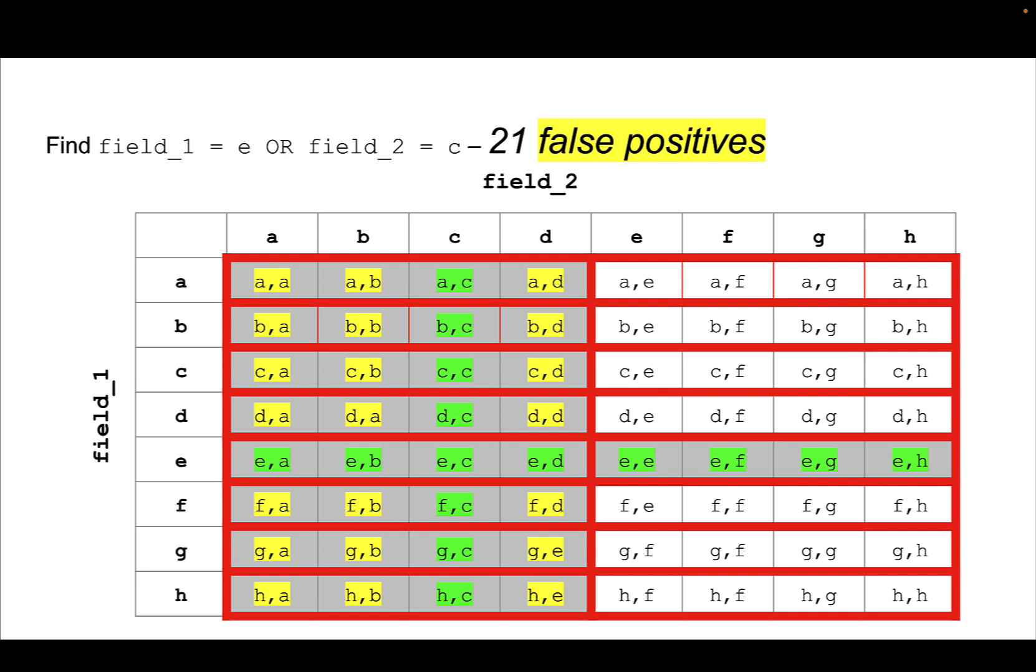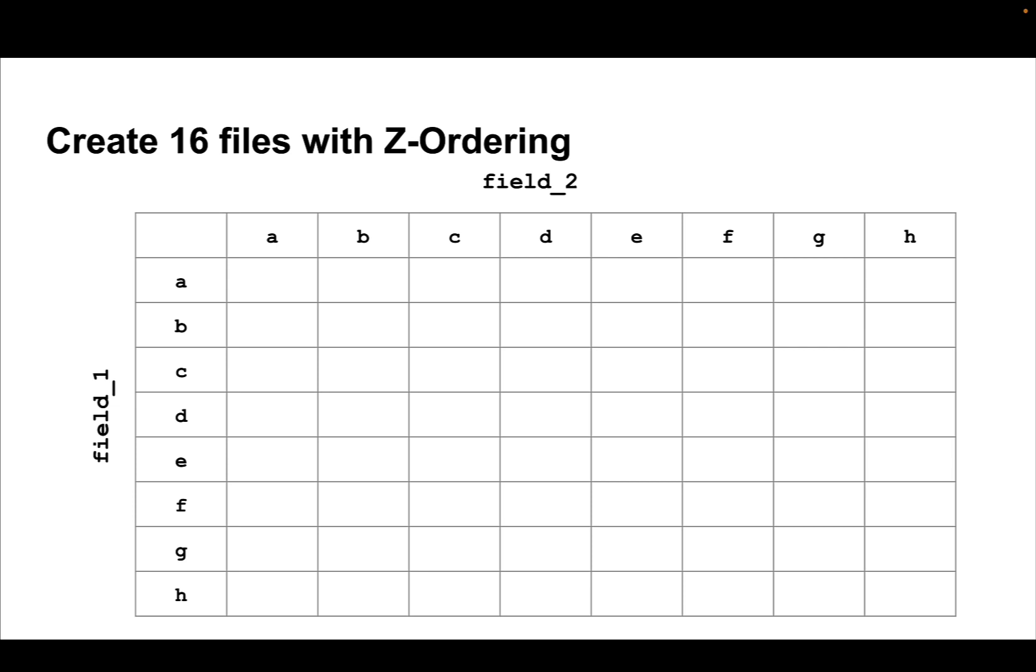So okay, that probably sounds reasonable considering what we've talked about in that classic total order sorted model from left to right and so on. Kept it simple with two dimensions. Let's do that same scenario but this time let's use this concept called Z-ordering. And again, I'm trying to very simplify this with the visualization - there's a lot more math to this.